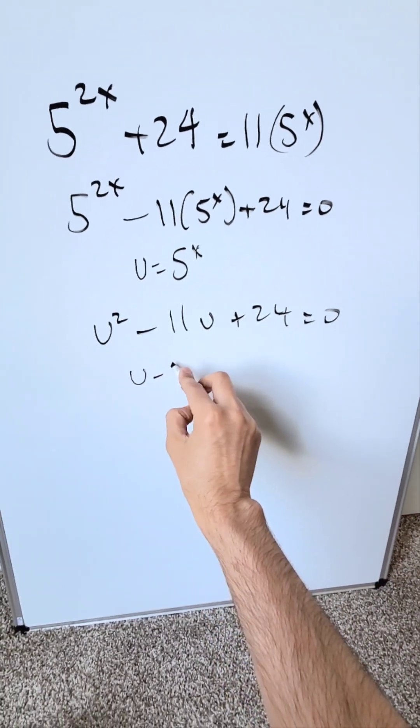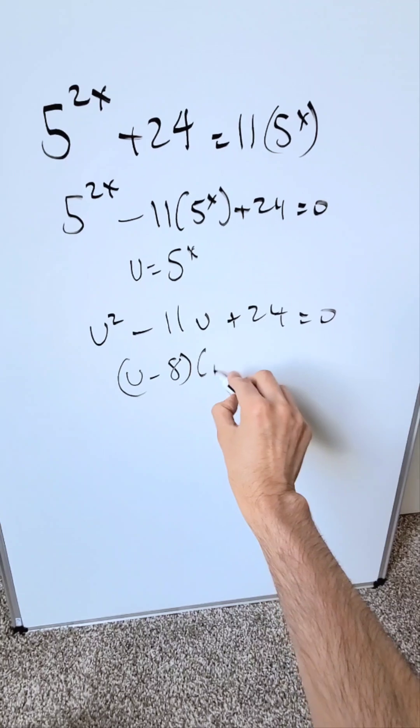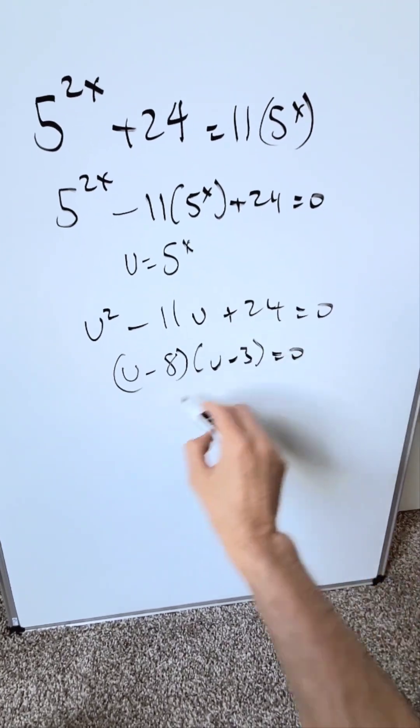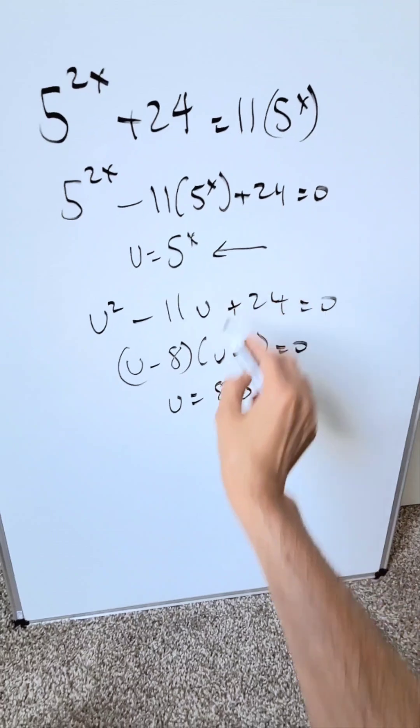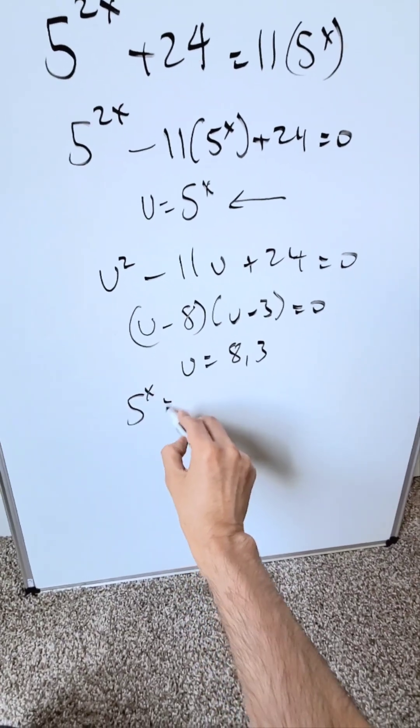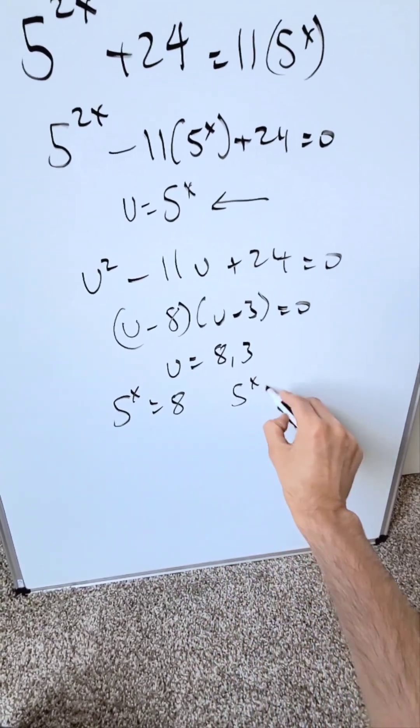Factor this. We have u minus 8 times u minus 3 is equal to 0, so u is equal to 8 or 3. But u is also equal to 5 to the power of x. Bring it in: 5 to the power of x is equal to 8, and 5 to the power of x is equal to 3.